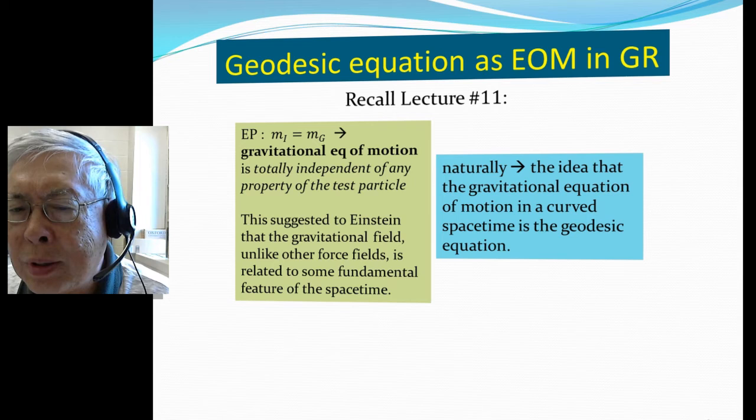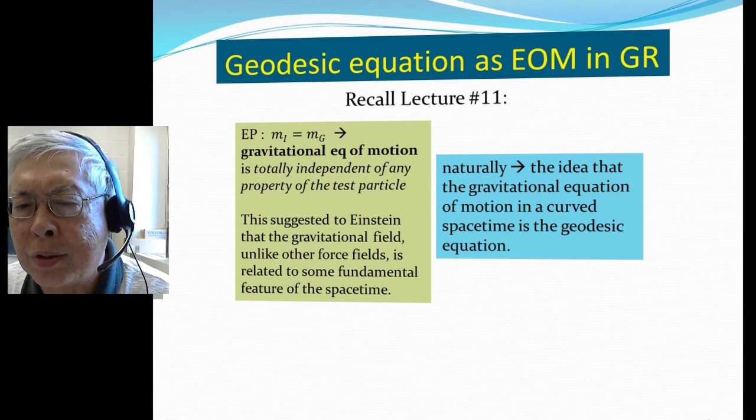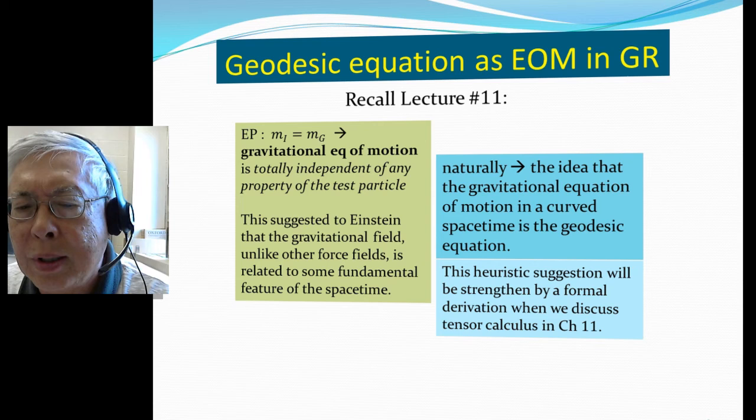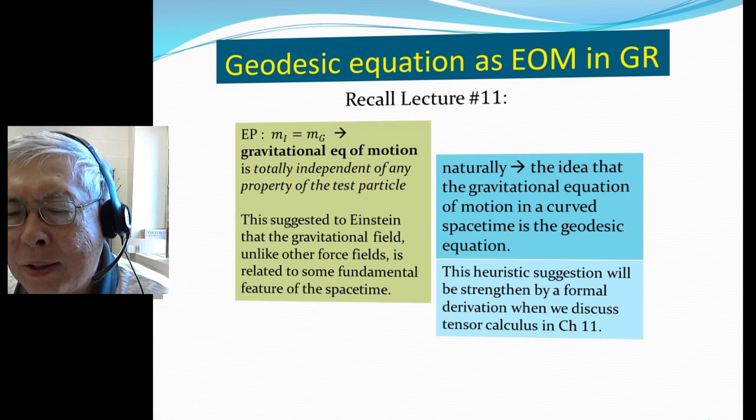The geodesic is the shortest possible curve in curved space-time. Of course, this is just a heuristic suggestion. We will strengthen this by a formal derivation in chapter 11, when we learn to do tensor analysis in general relativity.